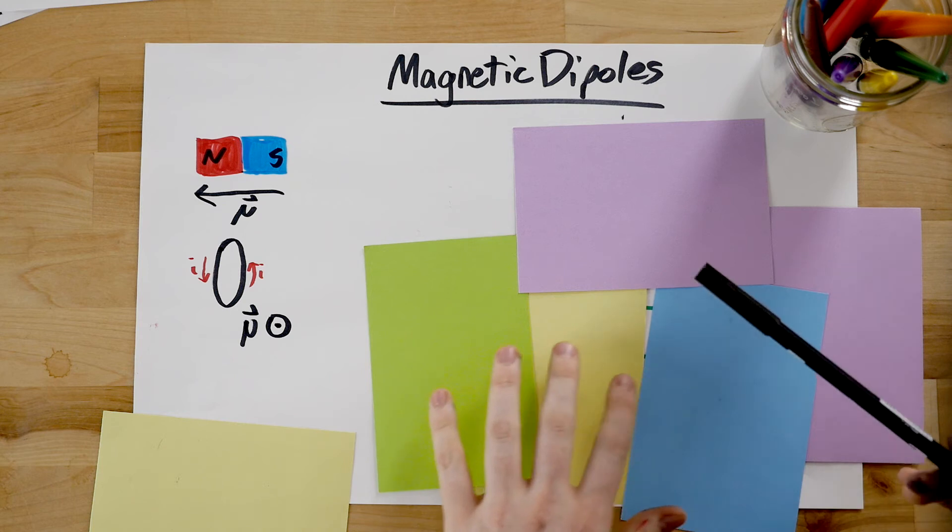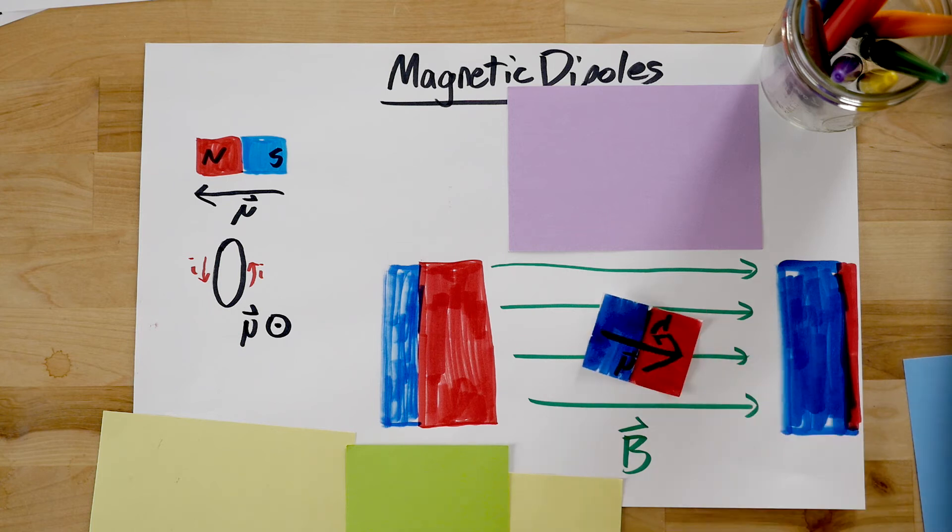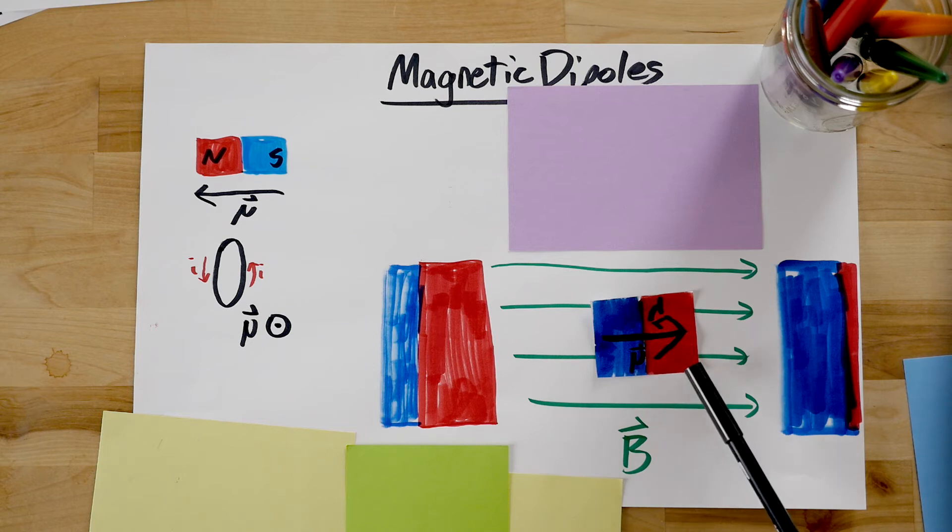So if I place a bar magnet into a big external magnetic field, the most stable orientation of this bar magnet would have mu correspond to the same direction as B. This would mean that the north and south poles of the bar magnet align with the opposite ends of the stable field.